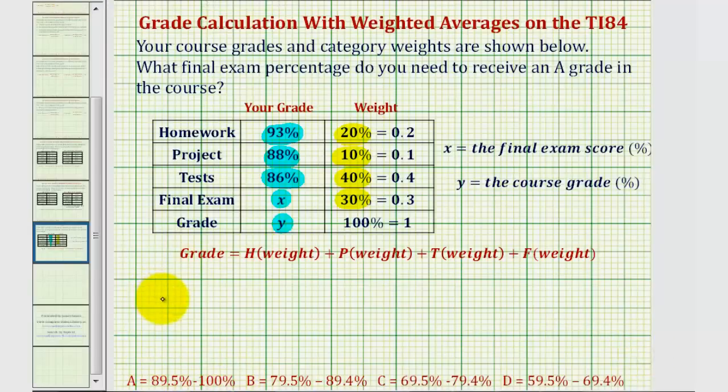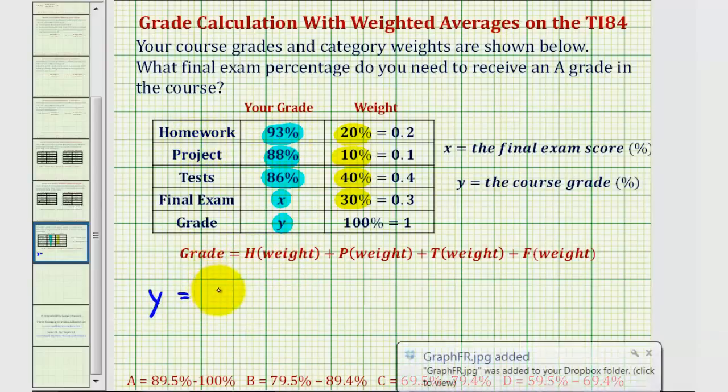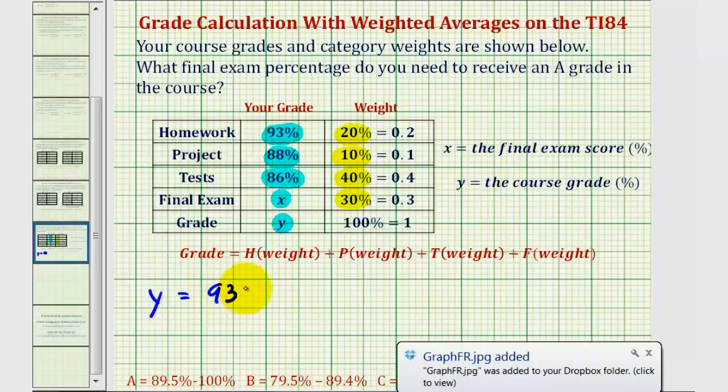So our equation is going to be Y, the semester grade or course grade, will be equal to the homework percentage times the weight. The homework percentage is 93%, we'll just use 93 times the weight of 20% expressed as a decimal, which would be 0.2.